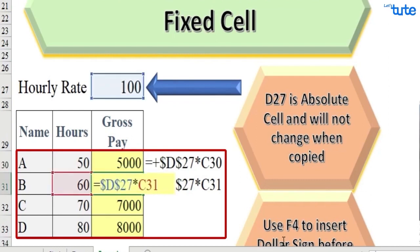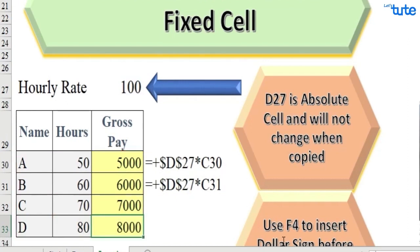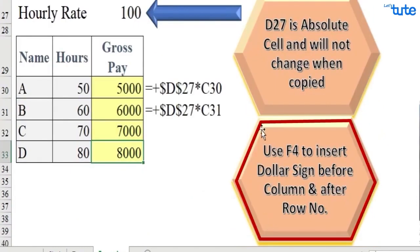Have you understood this? So we just have to press F4 after selecting the cell which we wanted to remain fixed in all formulas, and that will add dollar sign to that cell reference, making it absolute cell reference.